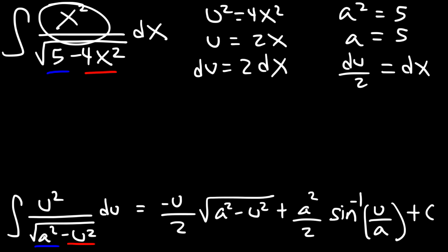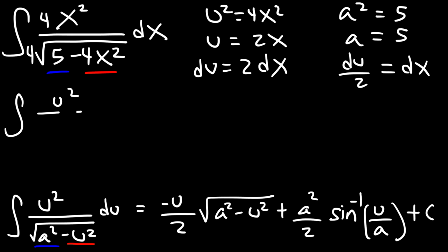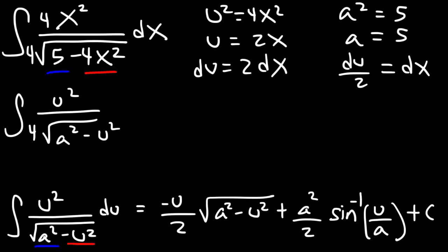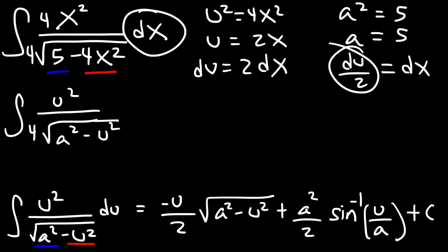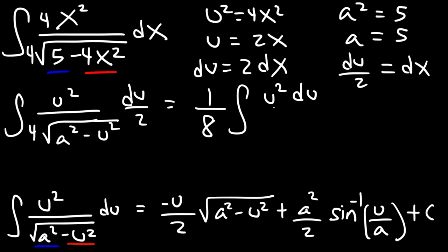We need to get rid of x squared and turn it into u squared, so we need a 4 in front of the x squared. We multiply the top and bottom by 4, then replace x squared with u squared, the 5 with a squared, and 4x squared in the radical with u squared. Then replace dx with du over 2. On the bottom we have 4 times 2 which is 8, so we get 1 over 8 times the integral of u squared du divided by the square root of a squared minus u squared.